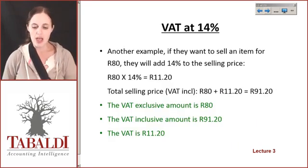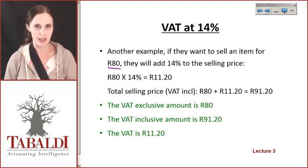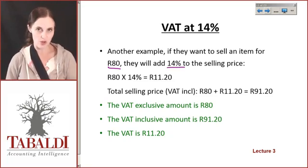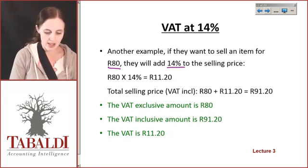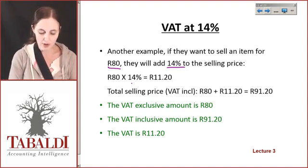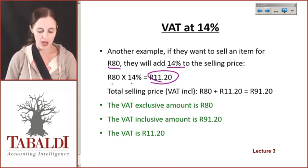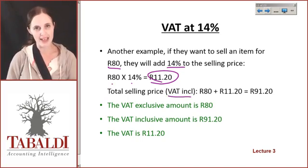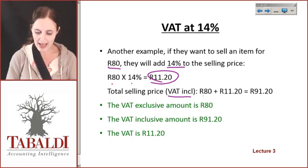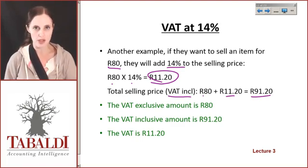Let's take a look at another example. If I want to sell an item for 80 Rand — if that is my selling price and I believe that's going to recover all of my costs — I have to add 14% of that to the selling price. So 80 times 14% equals 11 Rand 20. That 11 Rand 20 represents 14% of my selling price. My total selling price, therefore my VAT inclusive amount, will be 80 Rand plus the 11 Rand 20 VAT, which means that when I put it on the shelf, I will charge people 91 Rand 20 for it.